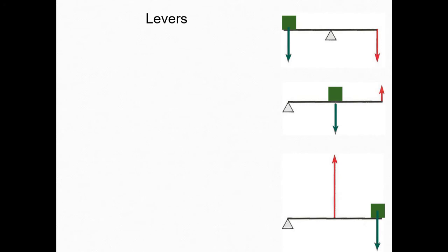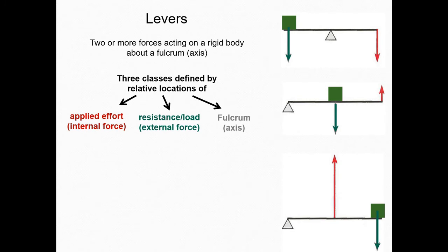Levers are mechanisms in which two or more forces act on a rigid body about a fulcrum or axis. There are three classes of levers defined by the relative locations of the applied force, the resistance or load force, and the fulcrum. We will be thinking about applied efforts in terms of internal muscle forces, and resistances and loads as external forces acting on the body.